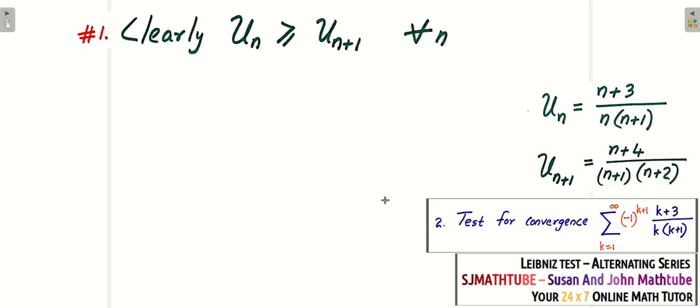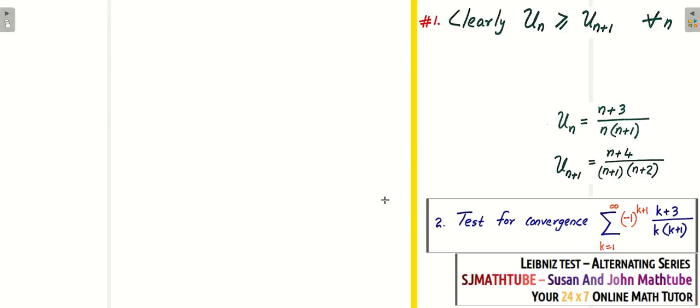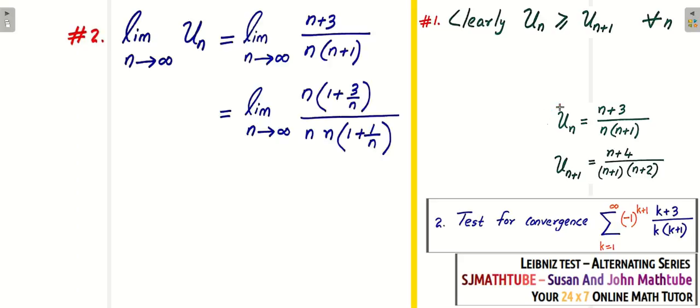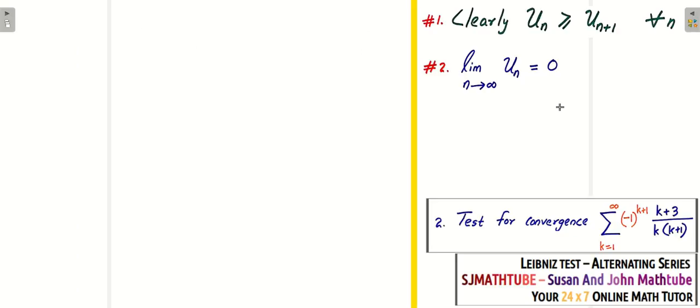Write clearly: un ≥ un+1. Now the second condition: find the limit as n tends to infinity of un = (n+3)/(n(n+1)). We can cancel and apply the limit, and the result is 0. Both conditions are satisfied, and hence the series is convergent.